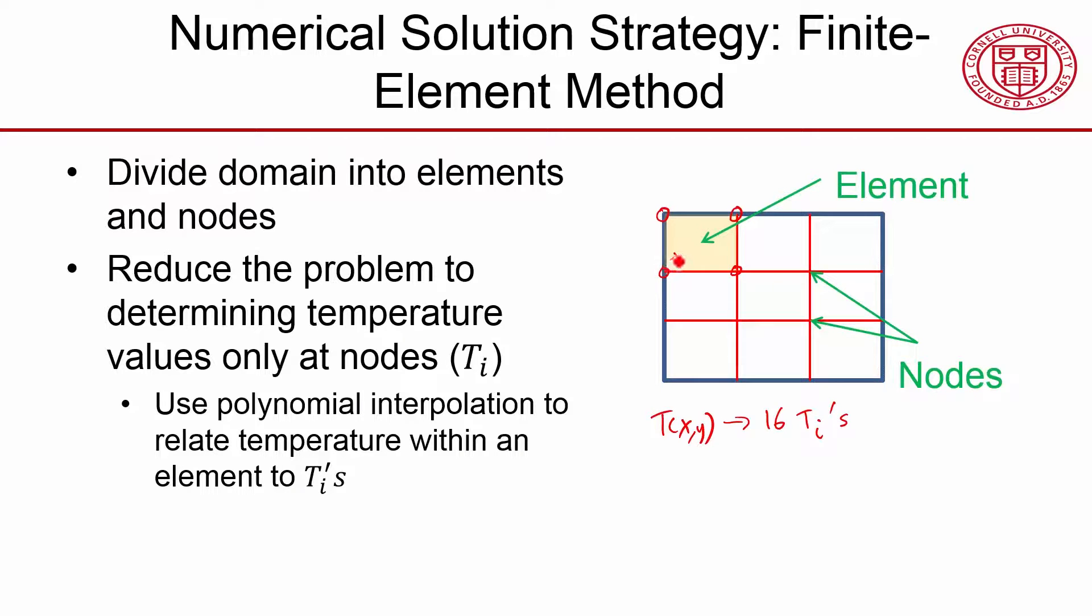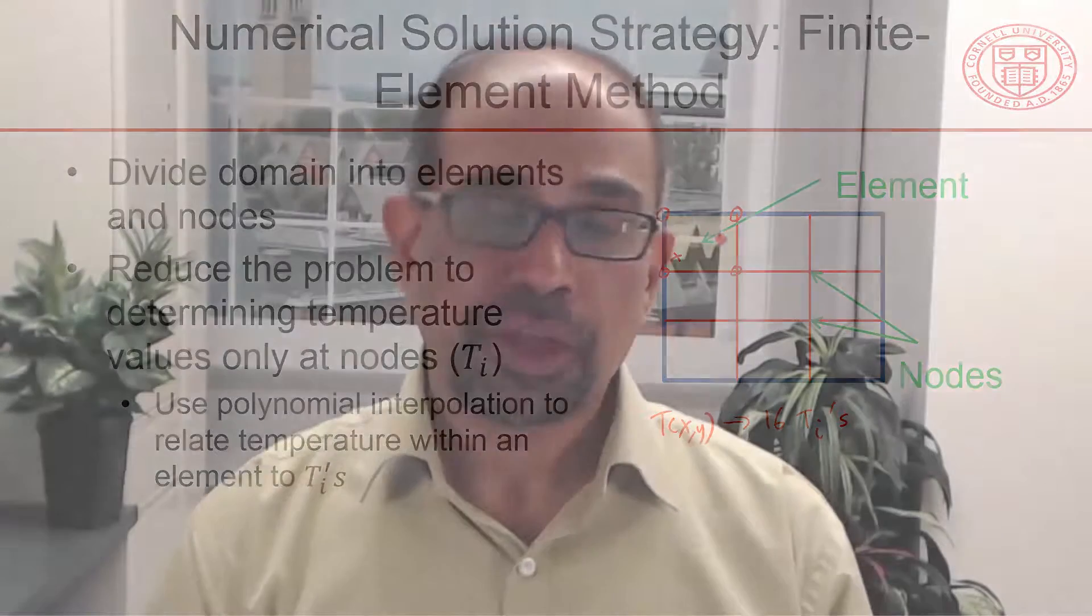I think of this value as a weighted average of these four values, and the weights for each of these values is given by the so-called shape function. For those of you who have seen shape functions, now you know that we need to determine only a discrete number of values.